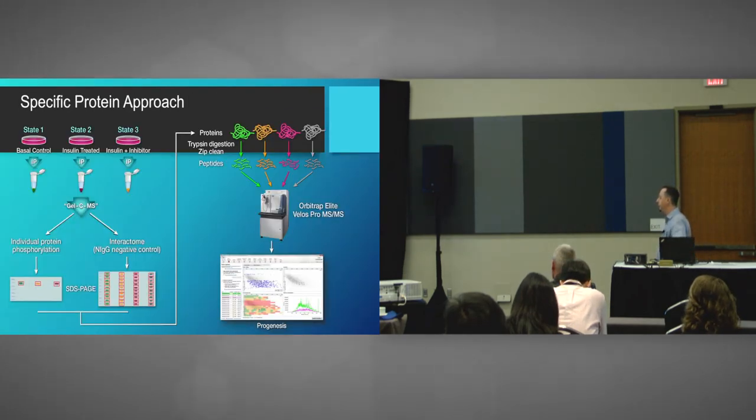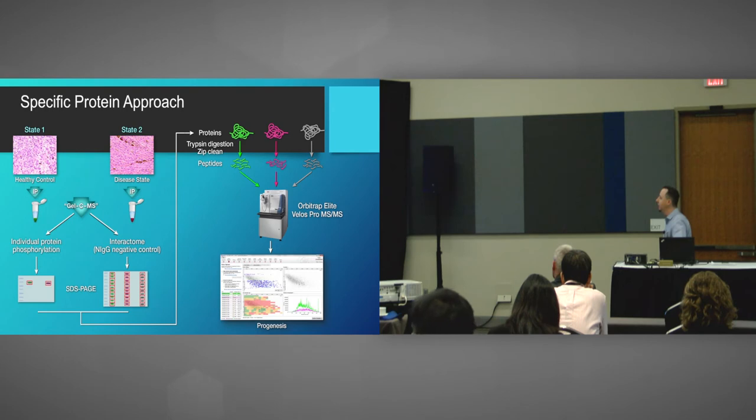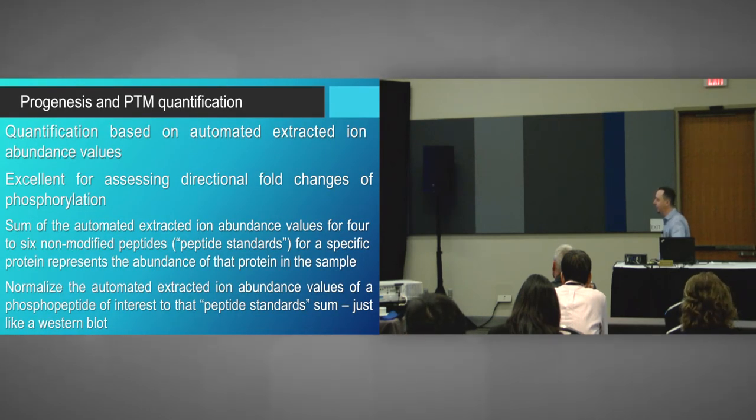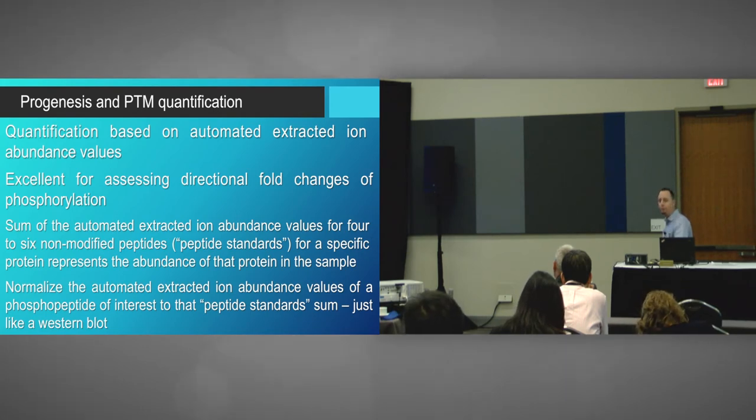So you can use Progenesis. And I've had fantastic results on, with my own work, my insulin action work, on analyzing individual protein phosphorylation and interact on studies. You can do it all. In addition, you can do that from disease states as well. So last part of the talk is actually quantifying post-translational modifications by Progenesis. Each peptide gives you an automated extracted ion abundance value that you can use to actually quantify the abundance of your post-translational modification.